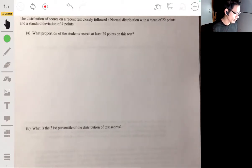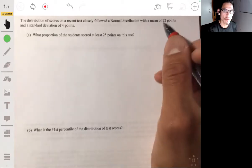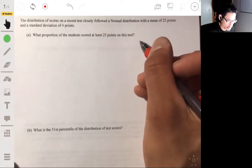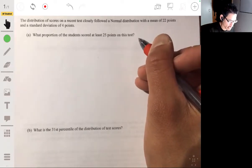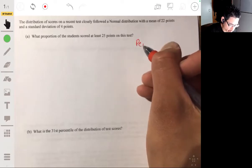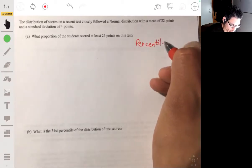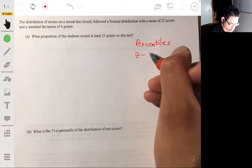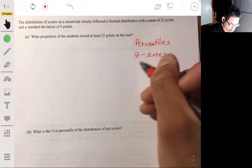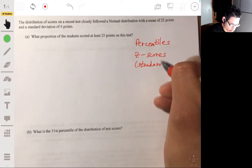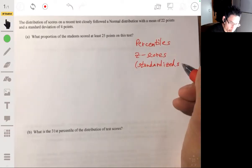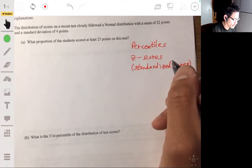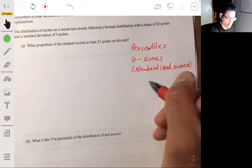There are essentially eight to ten key topics you need to understand in Chapter 2. You want to understand percentiles - what they are, how to calculate them, and know what they mean in context. Know your z-scores or standardized scores - again, understand what they are, know how to calculate them, know how to interpret them in context.